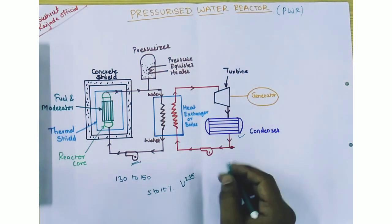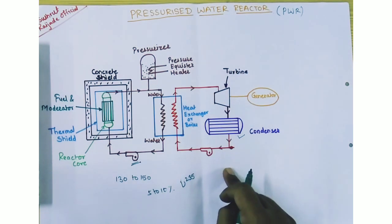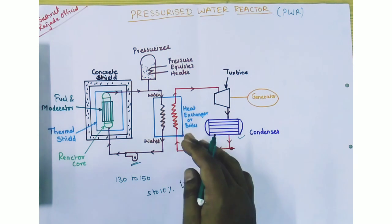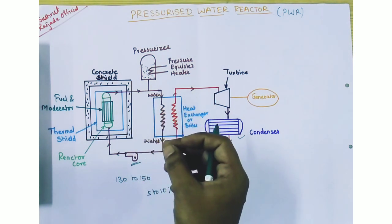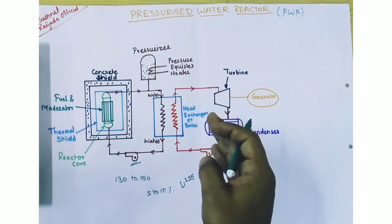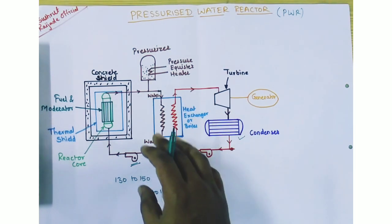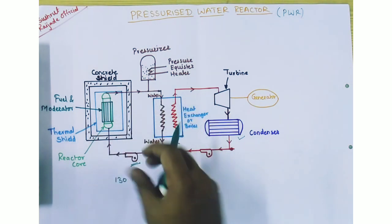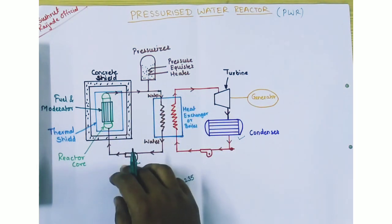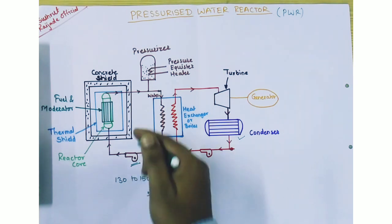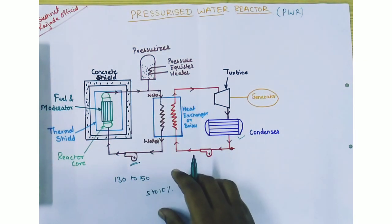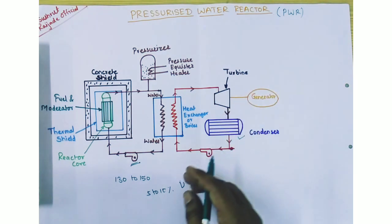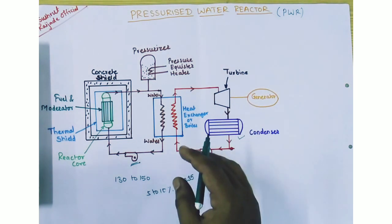The advantages of PWR are: first, water is used as both coolant and moderator, which is cheap and easily available. Second, the reactor is compact. Third, a small number of control rods are required in this water reactor. Fourth, fission products remain contained in the reactor.